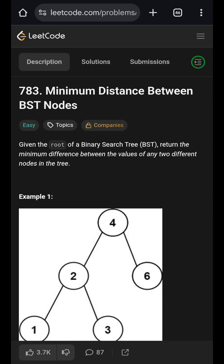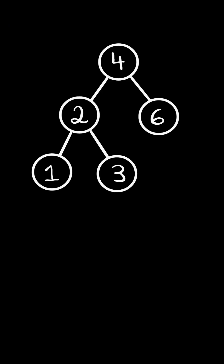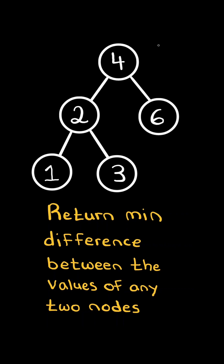Minimum distance between binary search tree nodes. Given a binary search tree, return the minimum difference between the values of any two nodes in the tree. For example, consider the difference between the values 1 and 6 in the tree. There exists an even smaller difference between the values 1 and 2 in the tree, so we return the minimum difference between the values of any two nodes — in this case, being 1.